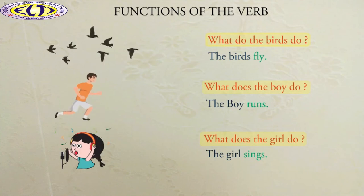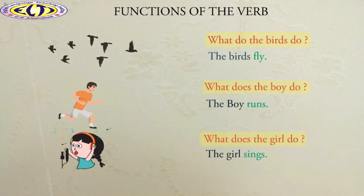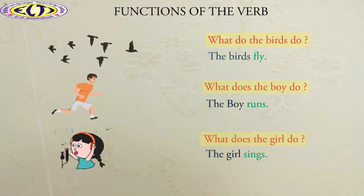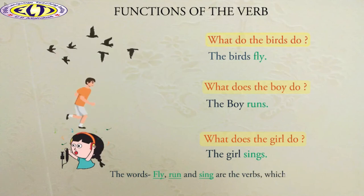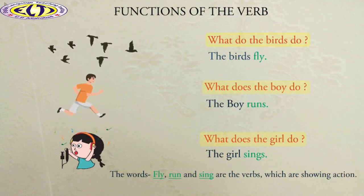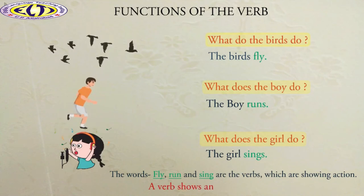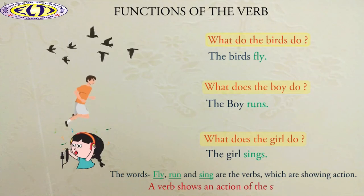Now, tell me what are the words that show actions? Absolutely right. The words fly, run, and sing are the verbs which are showing action. Therefore, we can say that verb shows action of the subject.